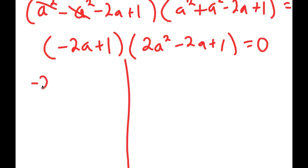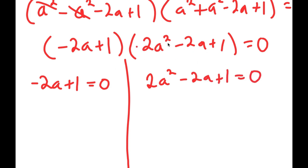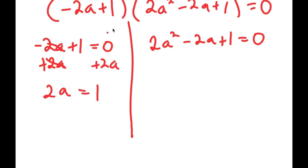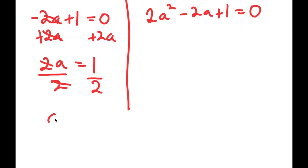I'm going to divide this into two equations. My first equation is negative 2a plus 1 equals 0, and my second is 2a squared minus 2a plus 1 equals 0, because either factor equaling zero makes the whole product zero. For the first equation, adding 2a to both sides gives 2a equals 1, and dividing by 2 gives a equals 1 half. So this is one solution.